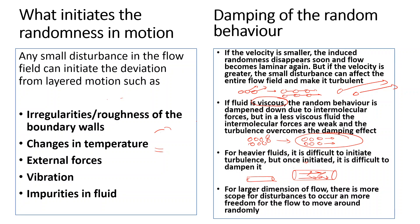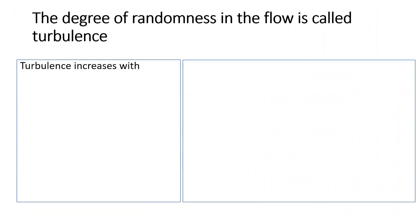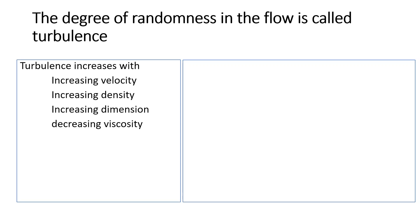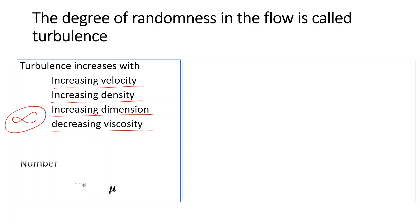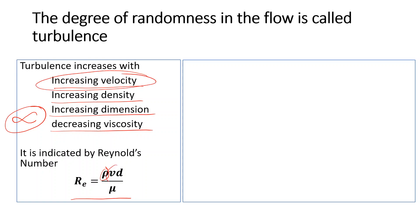This degree of randomness is called turbulence, and turbulence increases with increasing velocity, increasing density, increasing characteristic dimension, and decreasing viscosity. If we express these proportionalities, we get a dimensionless number called the Reynolds number: Re = ρVD/μ, where ρ is density and V is velocity and D is the characteristic dimension in the numerator, and μ (viscosity) is in the denominator since turbulence decreases with viscosity.